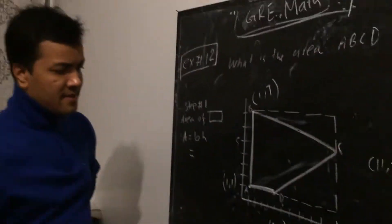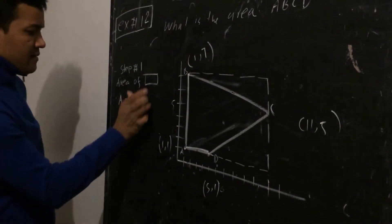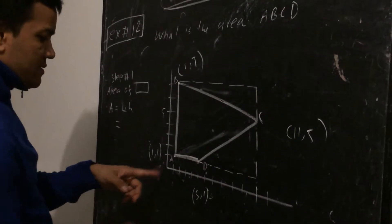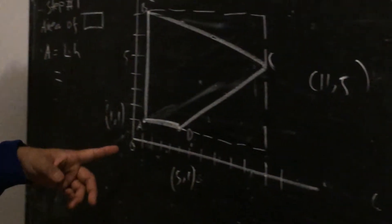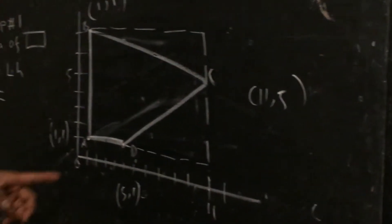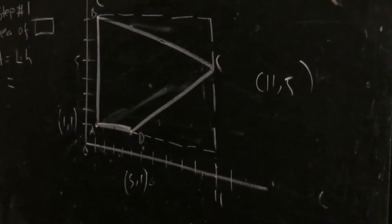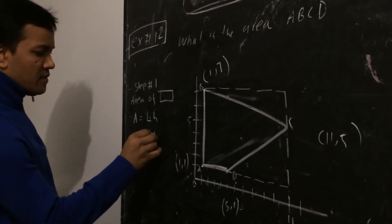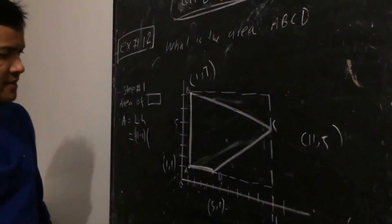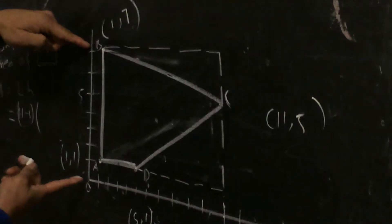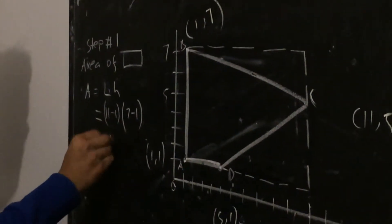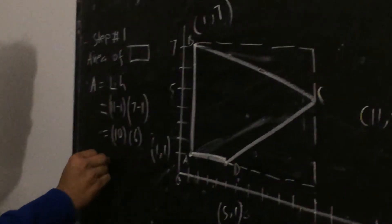So what is the base? Or length? Length times height. So what is the length? Length is from here, this is 0, this is 11. So from 0 to 11, it's just from here. So length is 11 minus 1. What is the height? Height is from here to here is 7, 0 to 7. But it's just from 1, so 7 minus 1. So 10 times 6, 60.